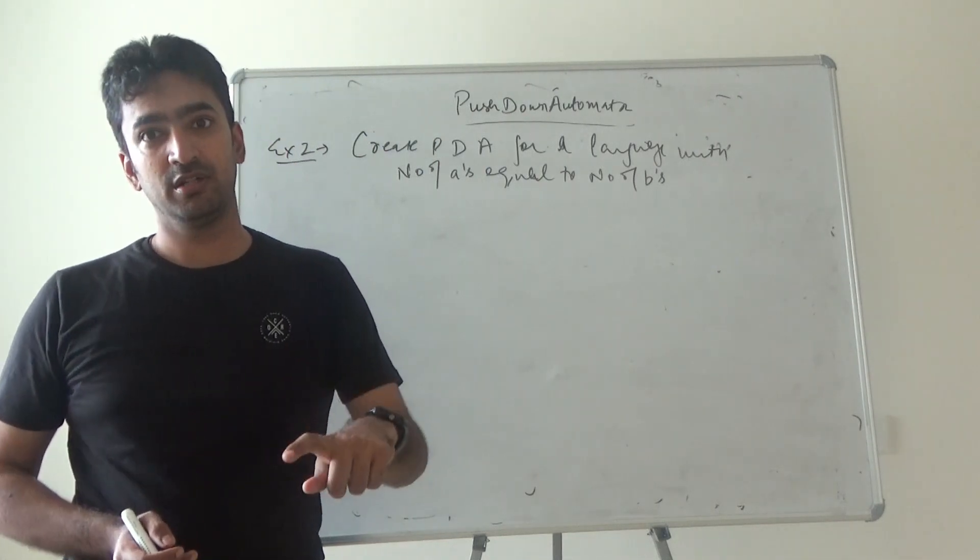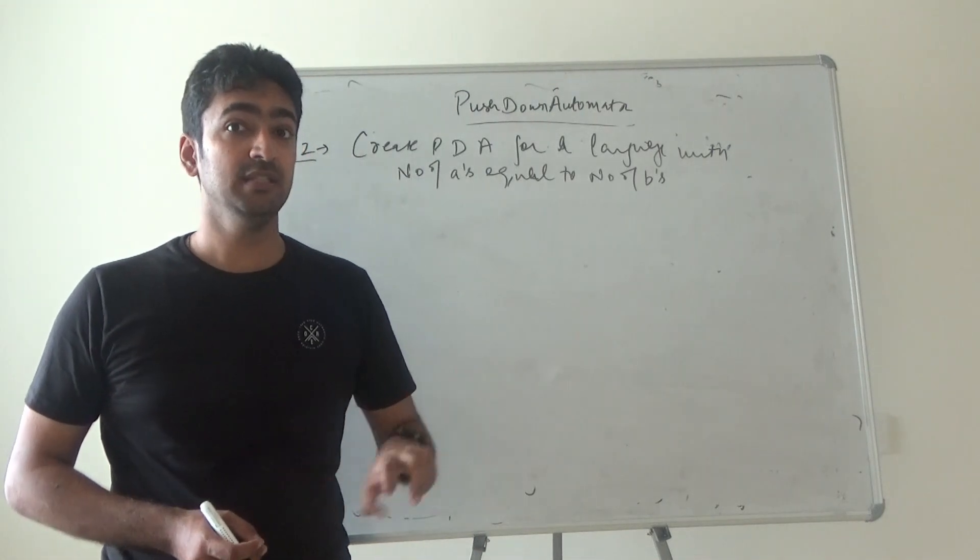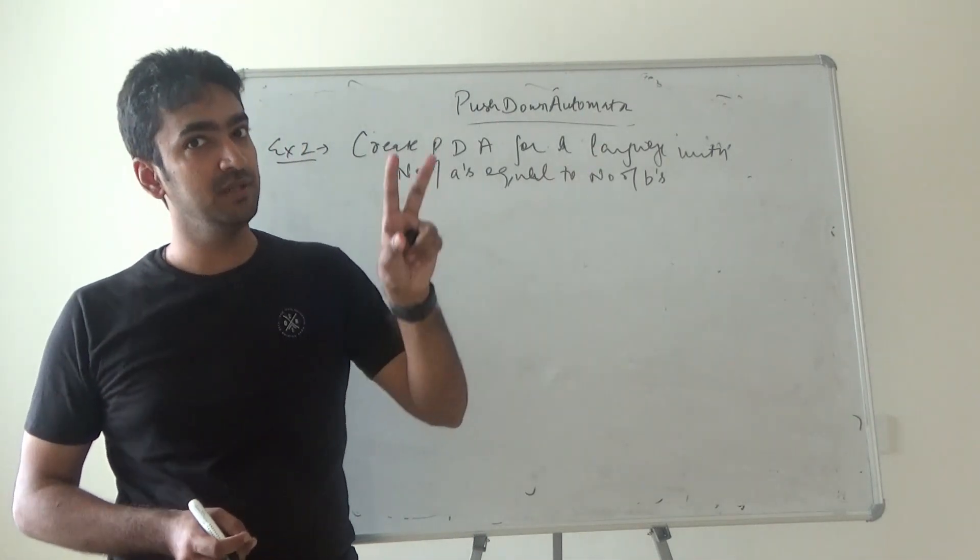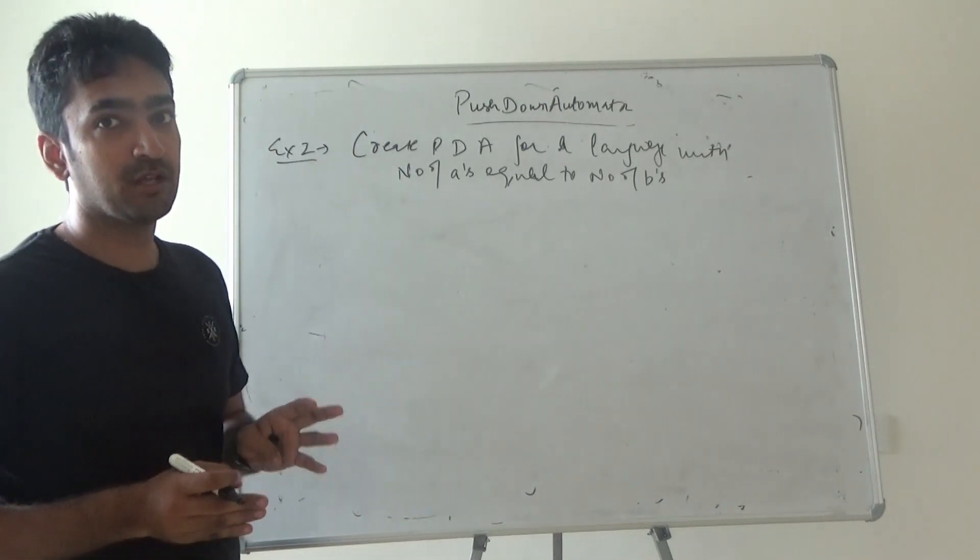Please don't compare it with the previous one because the previous one was a^n b^n, meaning a's come first and b's come second. In this particular scenario, nothing is specified about which comes first - the scenario is to match a's and b's.